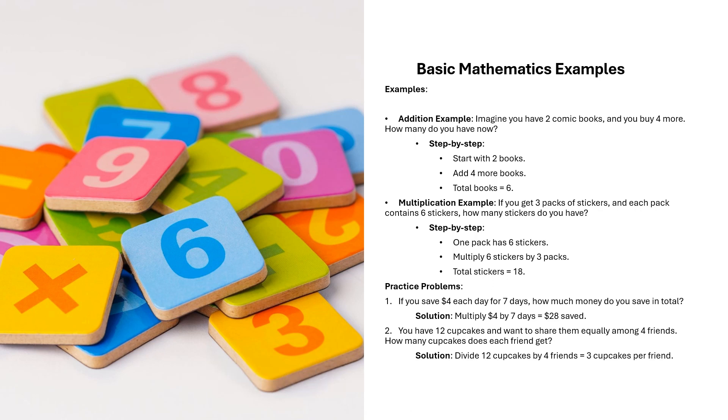Practice Problem 1: Saving Money. Let's solve a practice problem. If you save 4 dollars each day for 7 days, how much money do you save in total? First, understand that you save 4 dollars every day. Now, multiply 4 dollars by 7, the total number of days. The result is 28 dollars saved. So, 4 times 7 equals 28.